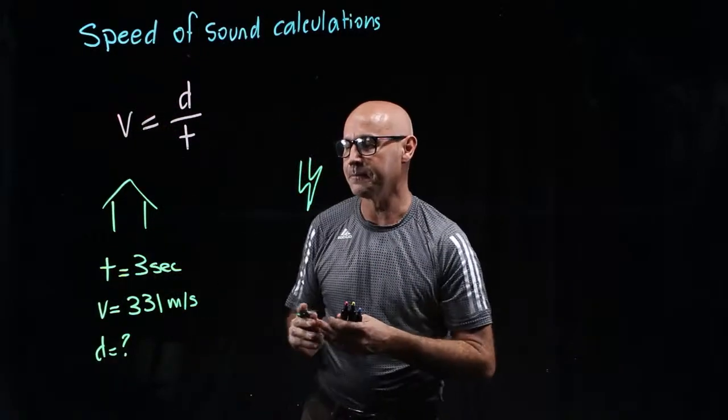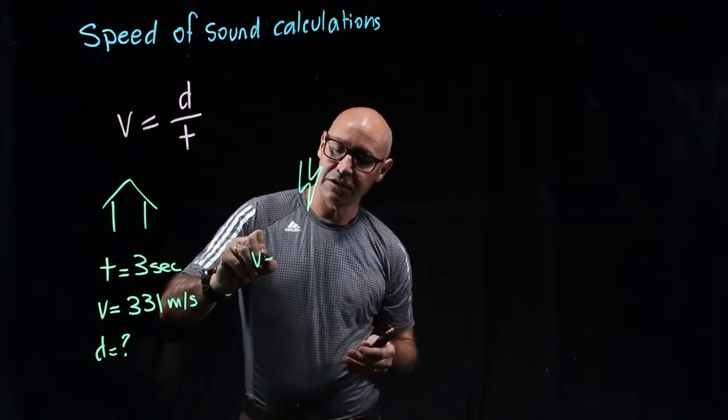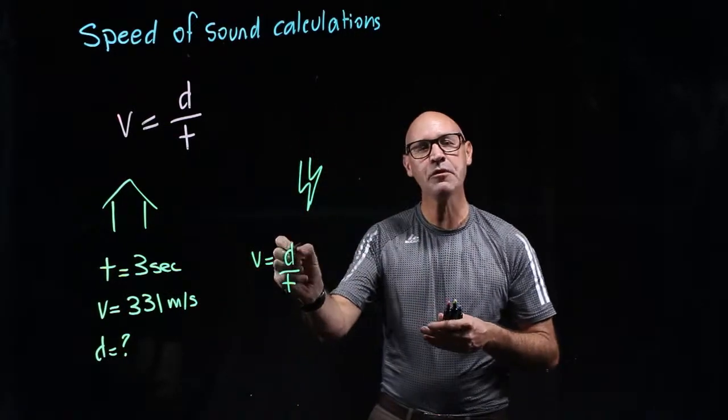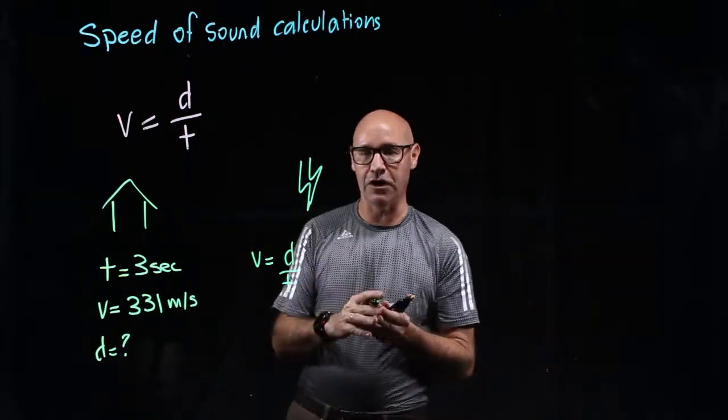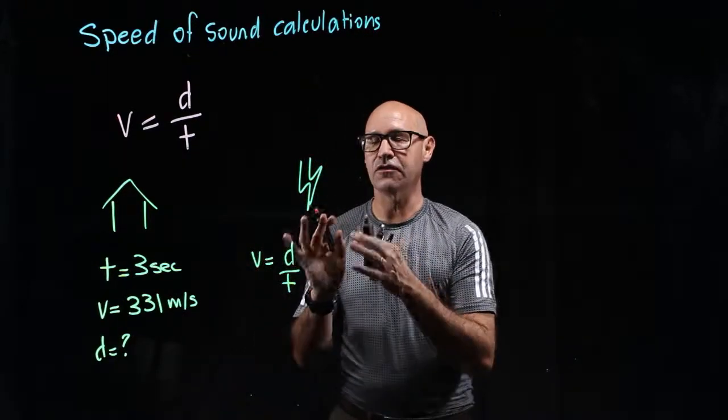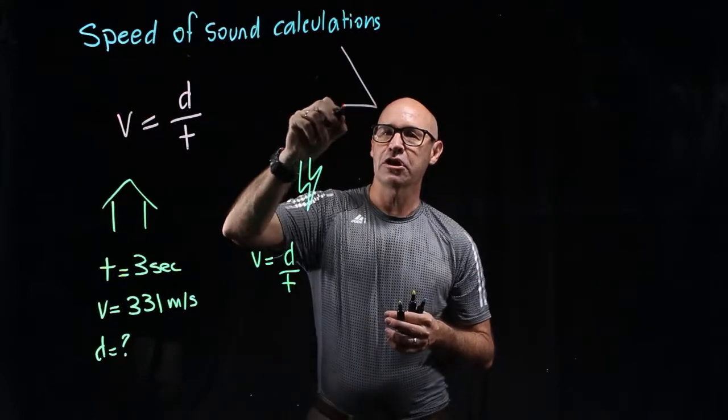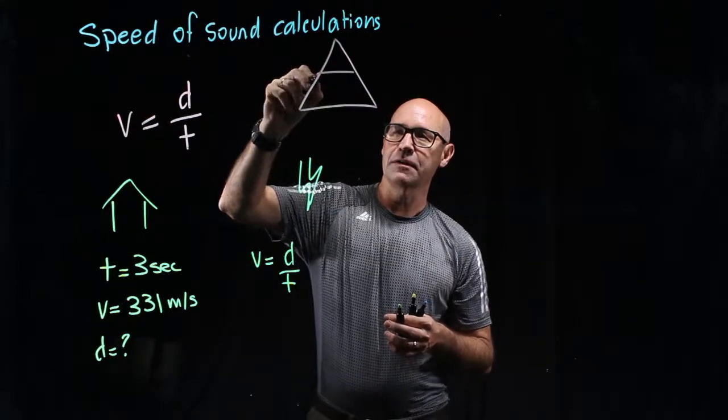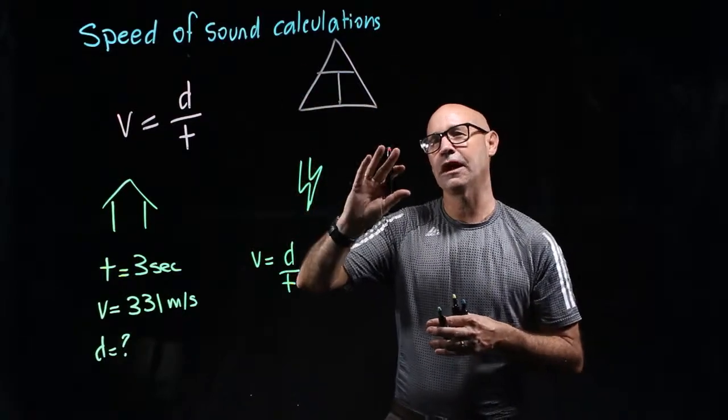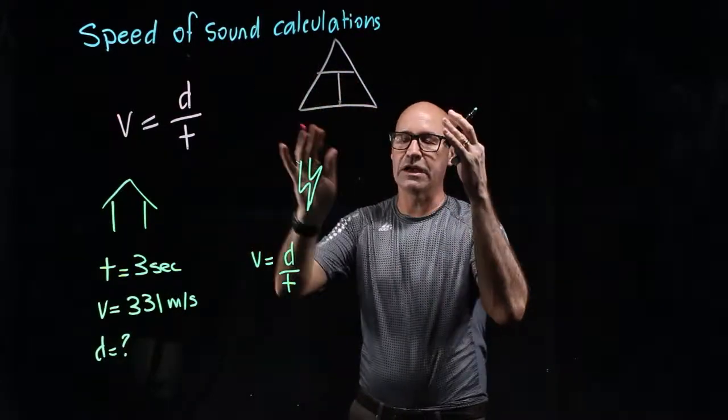So here's our formula, V equals D divided by T. We want to put D by itself on the left hand side. So there's a couple of ways that we can do this. I want to show you something called a mad T. See, it's got a T here. This is a really nice way of learning how to move an equation around.